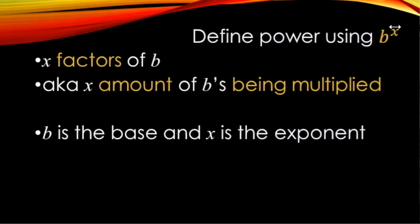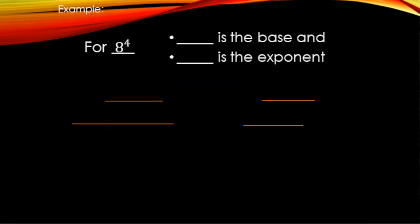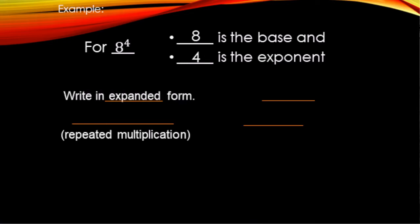For example, if b is 6 and x is 5, we'd have five 6s being multiplied. Let's look at 8 to the fourth power. 8 is the base and the exponent is 4. Written in expanded form — showing the repeated multiplication — that's 8 times 8 times 8 times 8: four 8s being multiplied.